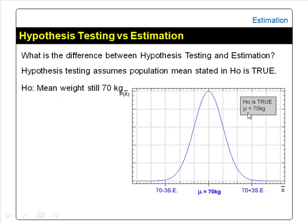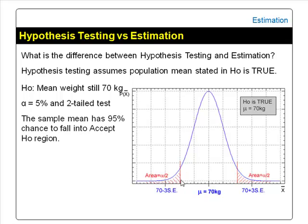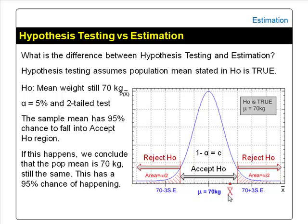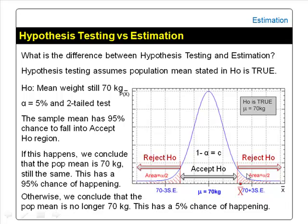Coming back to hypothesis testing, using the example that the mean weight of adults is 70 kg — we assume the population mean is really 70 kg. Using α = 5% in a two-tailed test, the sample mean has a 95% chance of falling into the acceptance region. If this happens, we conclude the population mean is still 70 kg, even though the sample mean may not be exactly 70 kg. There is a 95% chance of this happening. Otherwise, we conclude the population mean is no longer 70 kg — it has changed — with a 5% chance of this happening.